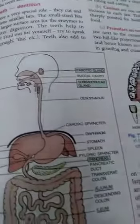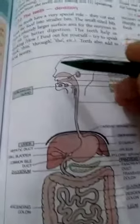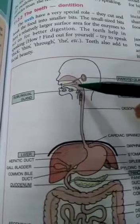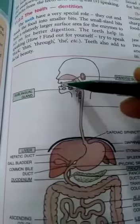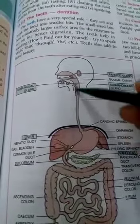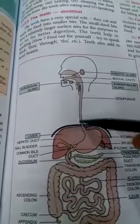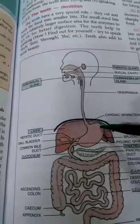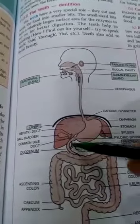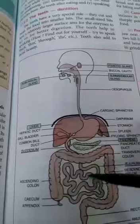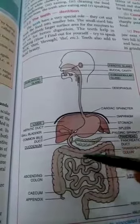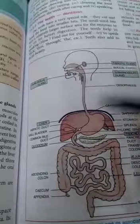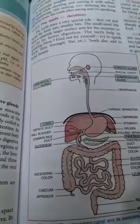You can see the diagram of the digestive system. The alimentary canal includes your mouth, esophagus — this tube which is also known as the food pipe — then your stomach, small intestine, and then the large intestine. This is called your alimentary canal.